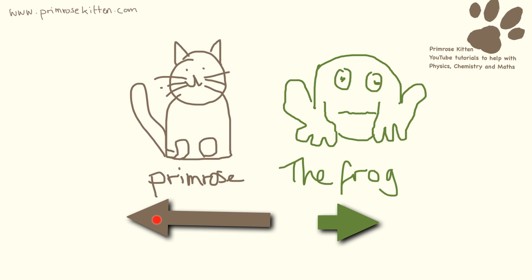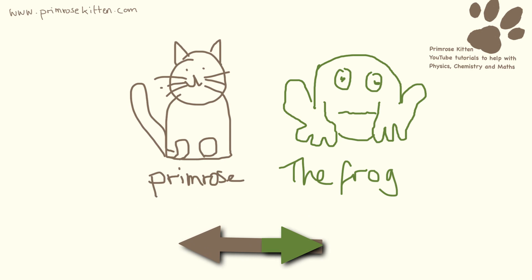Here we have Primrose trying to drag the frog this way and the frog is resisting by this much. So we can see that the arrows don't quite cover each other up. Primrose's arrow is much bigger than the frog arrow.